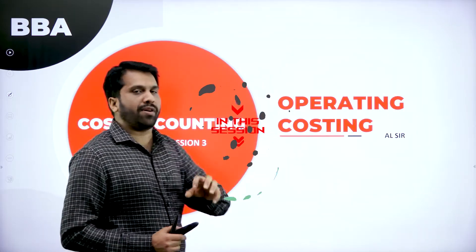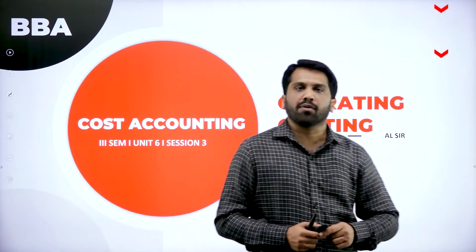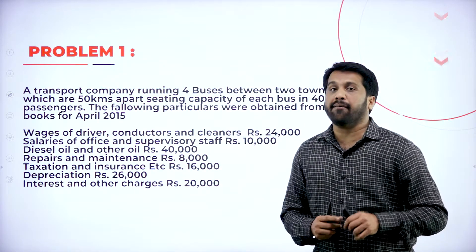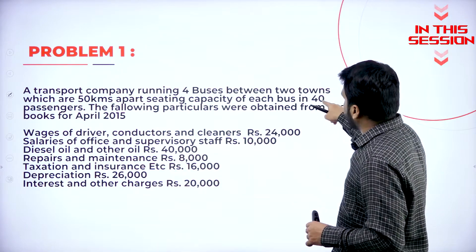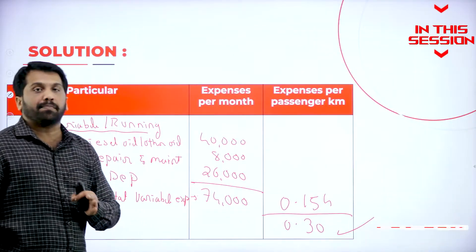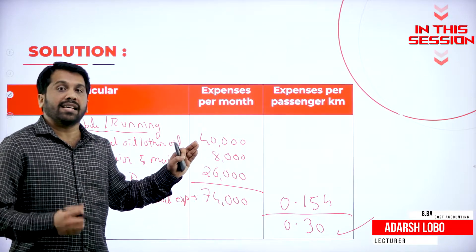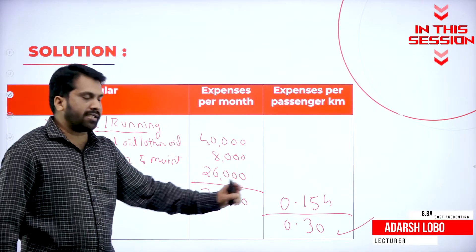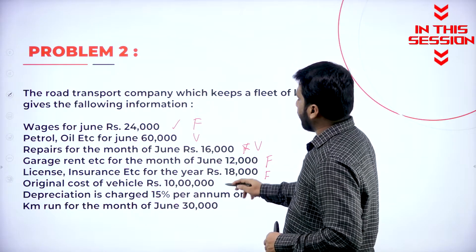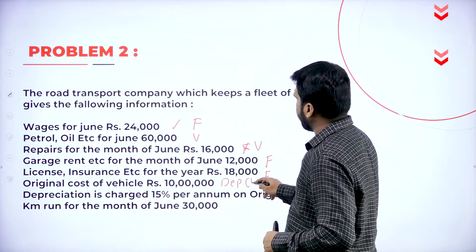We have to bifurcate the variable and fix it, then we have to start our problem. Percentage they have not mentioned — complete 40 seats are filled. Per passenger, the company or the service sector is spending 30 pesos per passenger. Your original cost of vehicle — we have to calculate depreciation and it is variable.